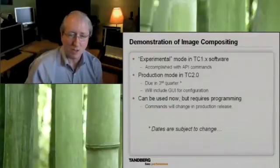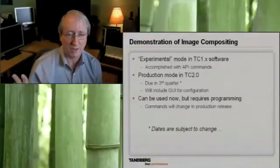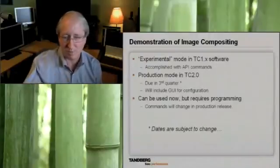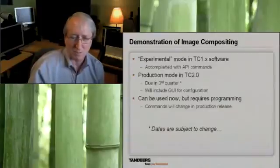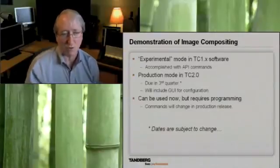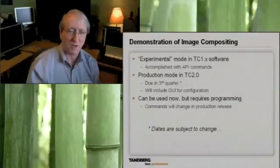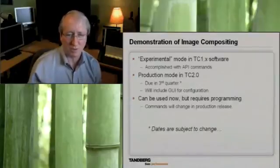In the third quarter, we're coming out with TC 2.0 software, and image compositing is going to move into full production at that time — no longer experimental. We will provide a graphical user interface so you can drag and drop images on screen, position them, size them, assign sources, and save that configuration. Image compositing can be used now, but it does require programming either a PC or a control system. With TC 2.0, an administrator will be able to use the GUI instead.